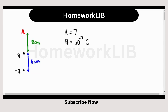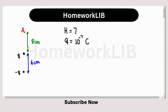In this exercise, we have a Hart's dipole that consists of two charges: one with a positive charge of 10 to the minus 7th Coulombs, and the other with a negative charge of minus 10 to the minus 7th Coulombs, separated by 6 centimeters. Right above the positive charge, 8 centimeters above, there is point A, and we want to calculate the electric field at point A, given that the dielectric constant kappa is equal to 7.